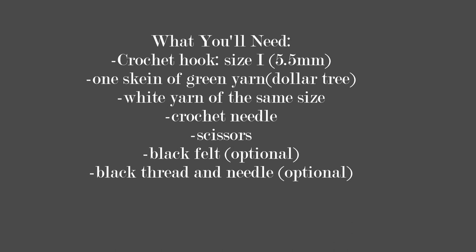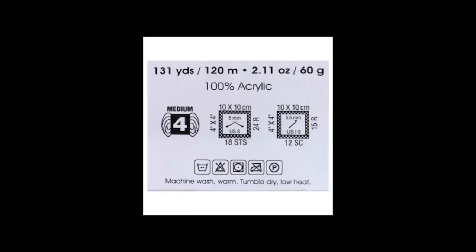You're also going to need a crochet needle, scissors, and black felt and black thread and needle if you decide to do the eyes as I did them in the previous video. This time around, I specifically chose Dollar Tree yarn because it's super easy to access, and they do have stats for it, which I'll show on the screen right now if you want to pause it and look over.